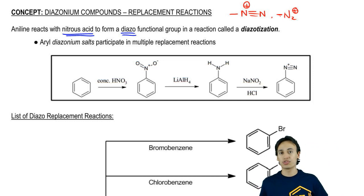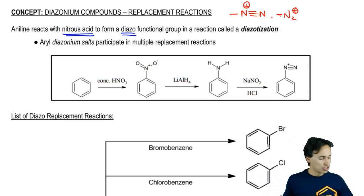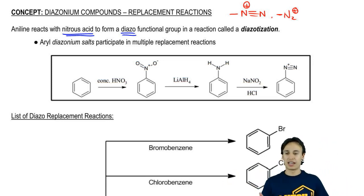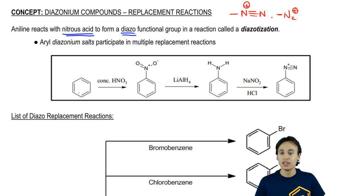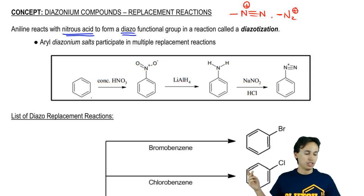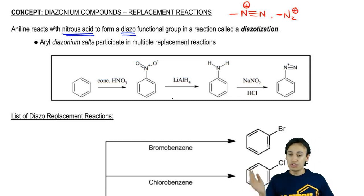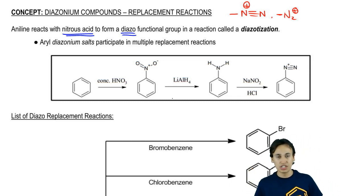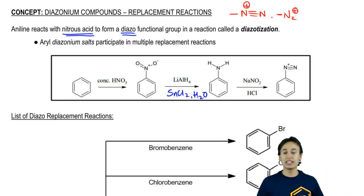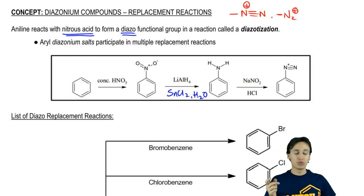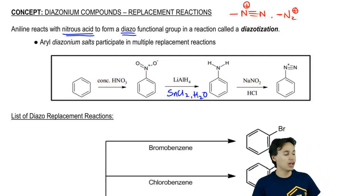These diazo groups are really good at switching out and reacting with certain types of reagents. Here's a common pathway to make a diazo compound. If you start off with benzene, the fastest way to get to a diazo group is: first do a nitration, then reduce it using lithium aluminum hydride or stannous chloride. Once you have your aniline, do the diazo reaction using NaNO2 over HCl to give you your diazo compound.